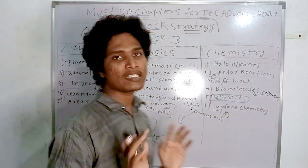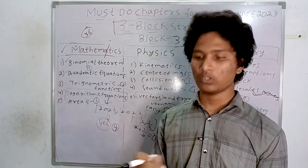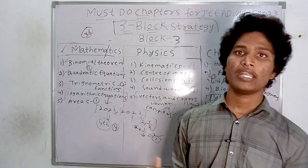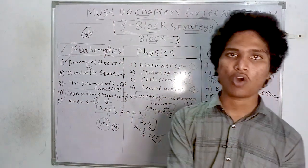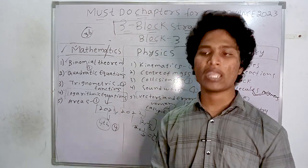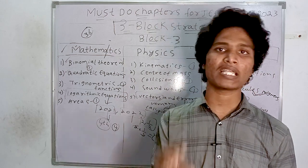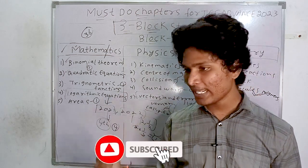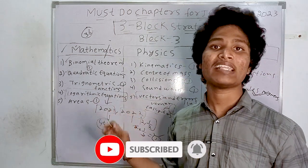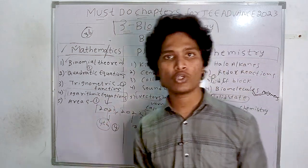All three blocks are now covered. For JEE Advanced preparation, start from block one, then block two, then block three. This way you cover the most important chapters first, and the least important ones at the end.